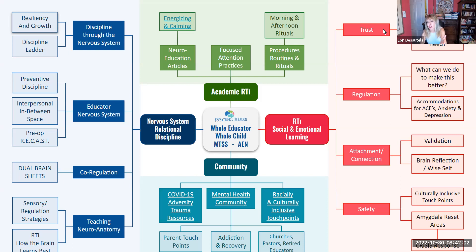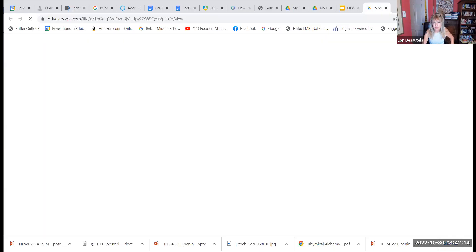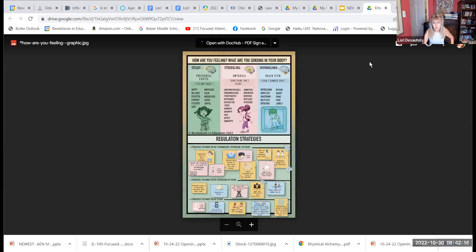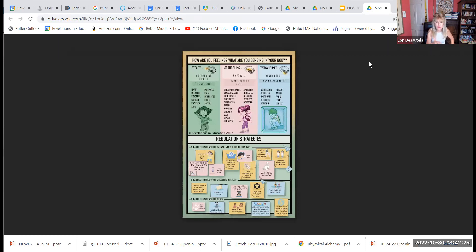Let's start with the neuroeducation of the nervous system, which is social and emotional learning. We look at trust, regulation, attachment, connection, and safety. Clicking on 'what do you need,' we've provided resources you can use at home, in the classroom, one-on-one, small group, or whole class — really meeting our students and our own children and adolescents where they are in their nervous system development.